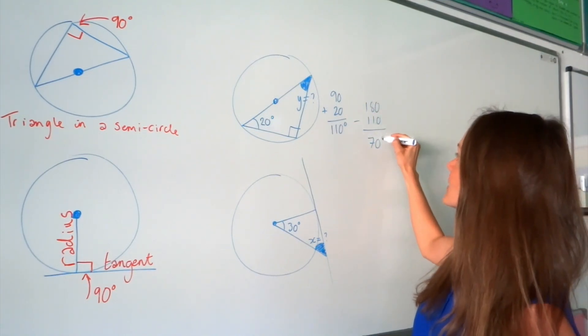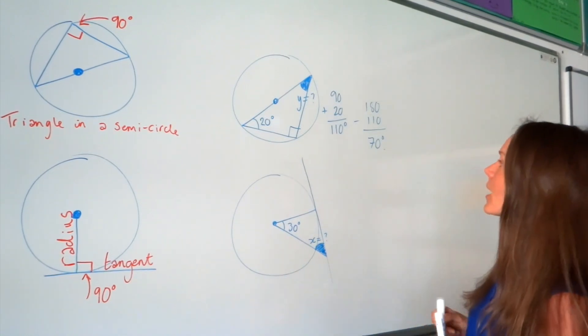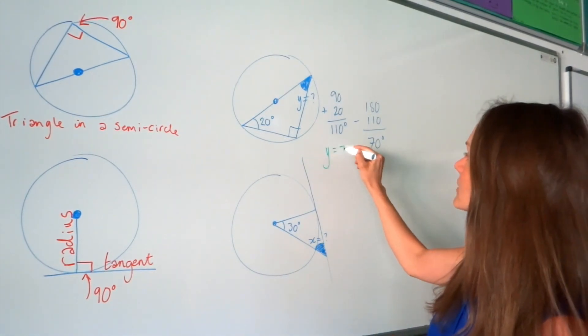So to work out the missing angle, you just need to subtract that from 180. So when you subtract 110 from 180, you get 70 degrees. So that is the answer to the first one there. So angle Y is 70 degrees.